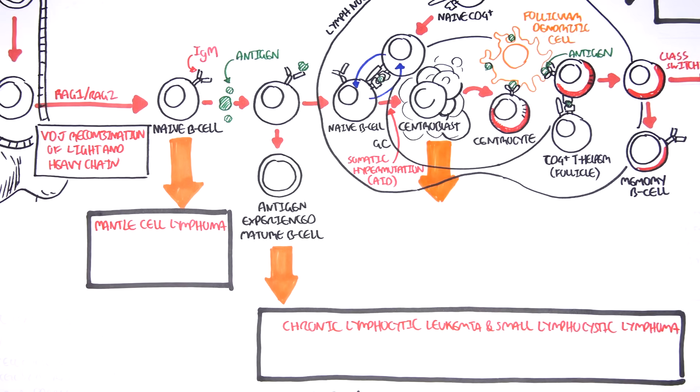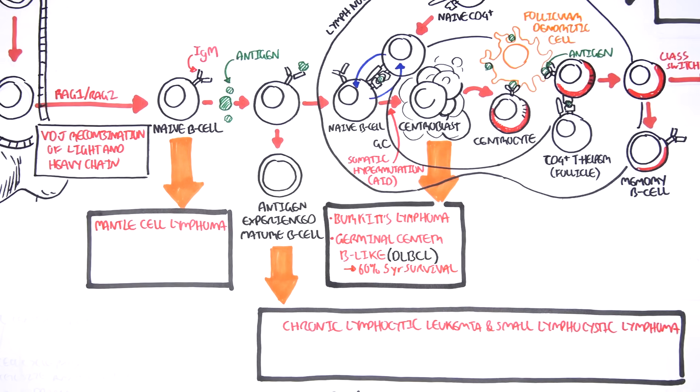The centroblasts in the germinal center can give rise to Burkitt's lymphoma and germinal center B-like diffuse large B-cell lymphoma or DLBCL, which has 60% five-year survival. Both Burkitt's lymphoma and germinal center B-like DLBCL are some of the common types of B-cell lymphomas, possibly because of the genetic mutation that occurs following somatic hypermutation in the germinal center. Following hypermutation in the germinal center, which is a normal process, it can lead to mutations leading to cancer.